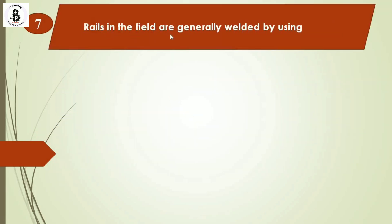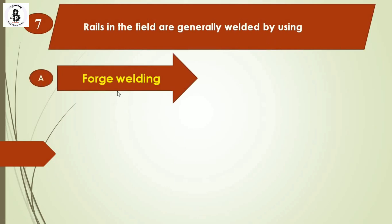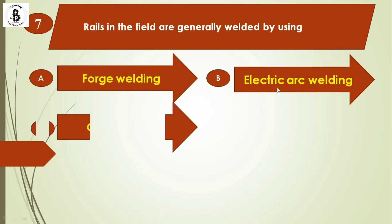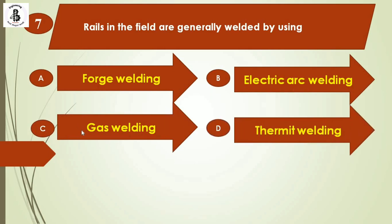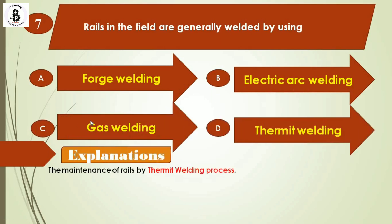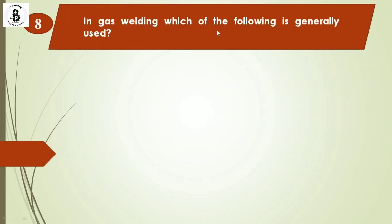Question 7: Rails in the field are generally welded by using — option A: forge welding, option B: electric arc welding, option C: gas welding, option D: thermite welding. Maintenance of rail tracks is performed by thermite welding, which is quite similar to the casting process. A cavity is made matching the rail section, filled with molten thermite mixture, and after solidification and secondary operations like grinding and cutting, the joint is completed. The right answer is option D: thermite welding.